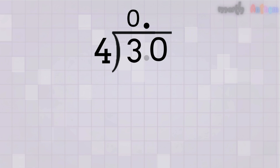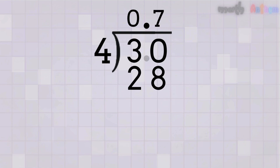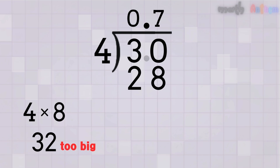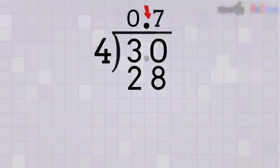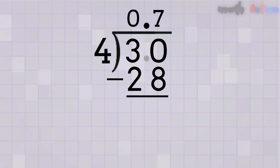That extra zero we added lets us keep dividing until there's no remainder. Pretend there's no decimal point for a moment — we treat 3.0 as 30. Let's ask, how many times does 4 go into 30? The answer is 7 times, because 4 times 7 equals 28. If we tried 4 times 8 it would be 32, and that's too big. So we write 7 in the quotient, right after the decimal point.